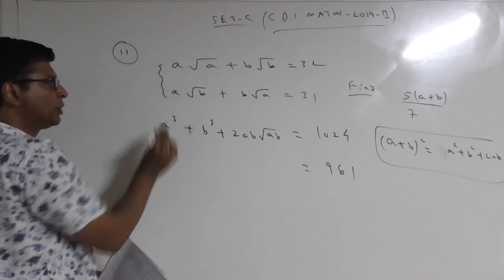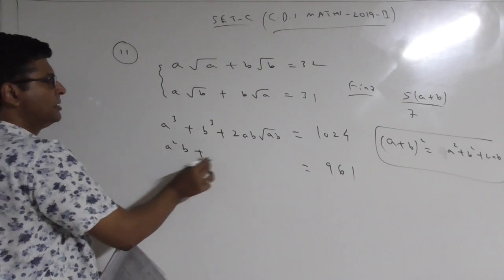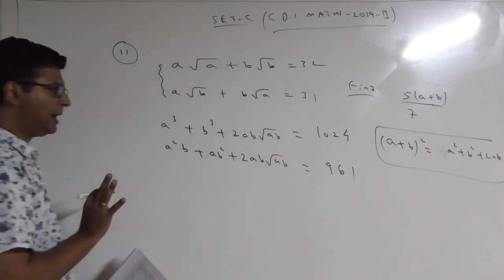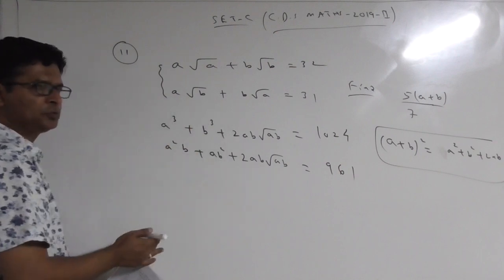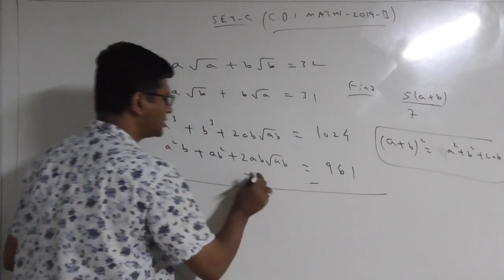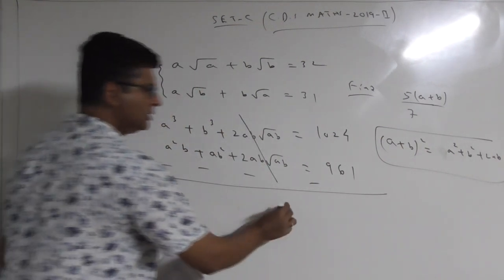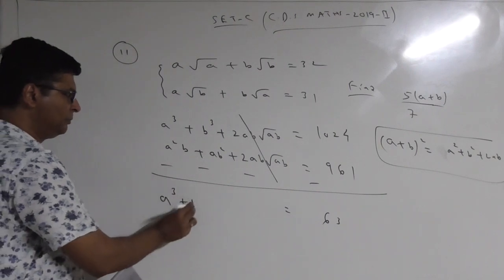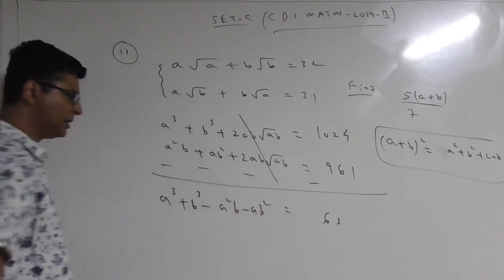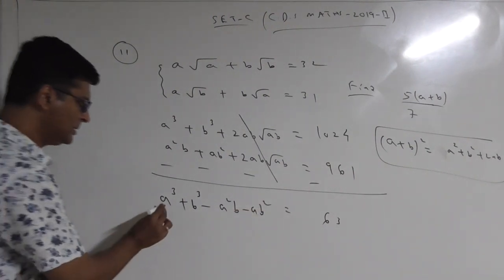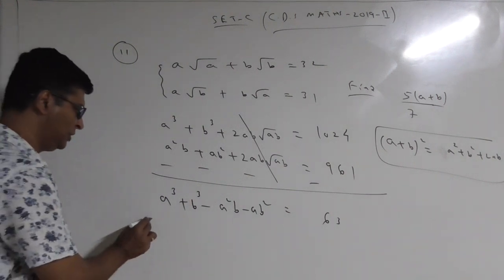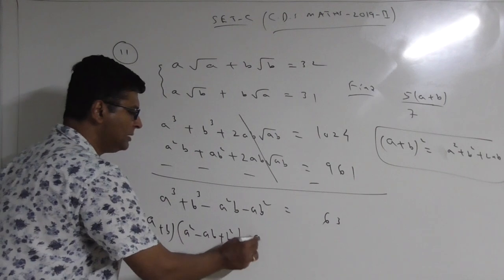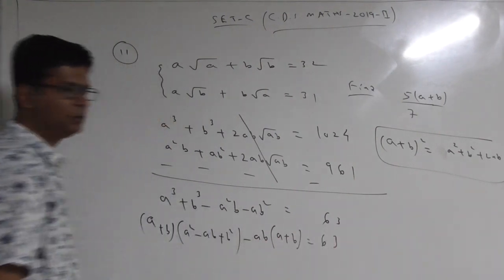Squaring the second equation gives A²B + AB² and the last term is 2AB√A — the same as the first. So we subtract the two equations to get rid of that term. When you subtract, the 2AB√A terms cancel. The result is 1024 - 961 = 63 on one side, and A³ + B³ - A²B - AB² on the other side.